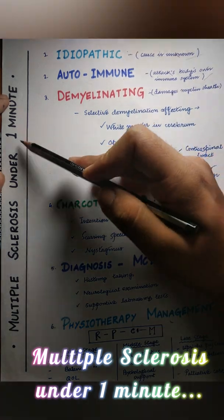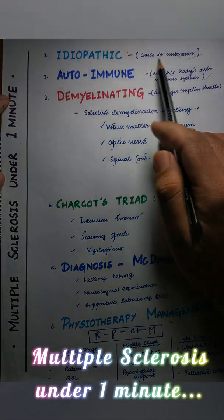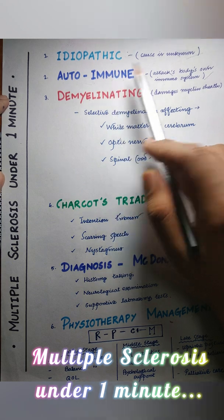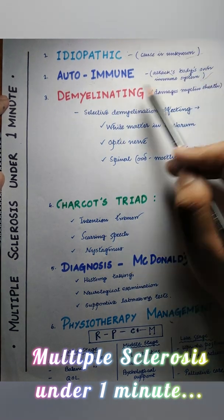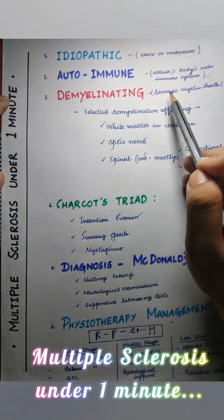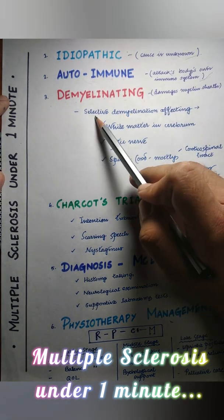Multiple sclerosis in under one minute. First, it is an idiopathic disease, meaning the cause is unknown. Second, it is an autoimmune disease, meaning it attacks the body's own immune system. Third, it is a demyelinating disease, meaning it damages the myelin sheath.